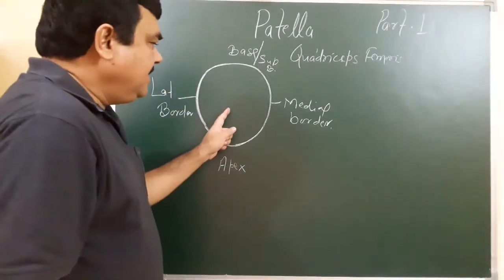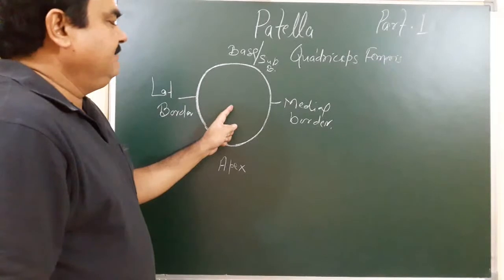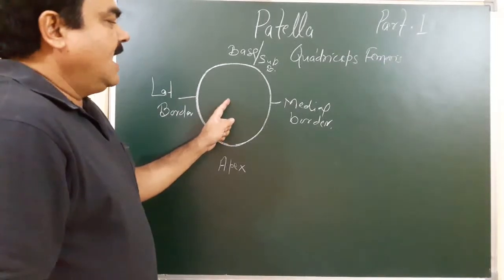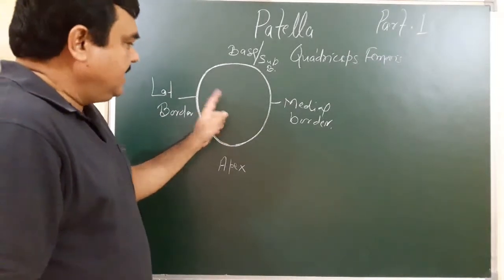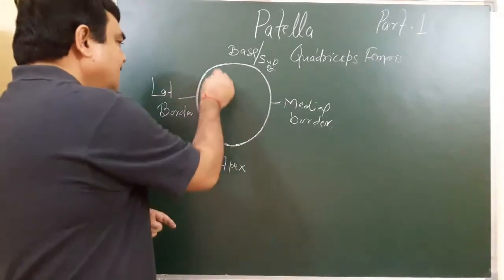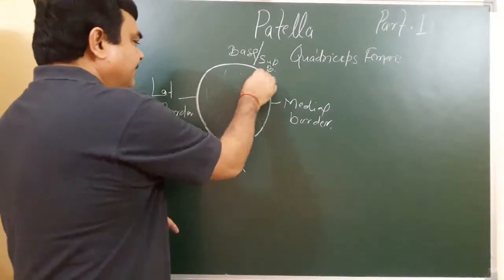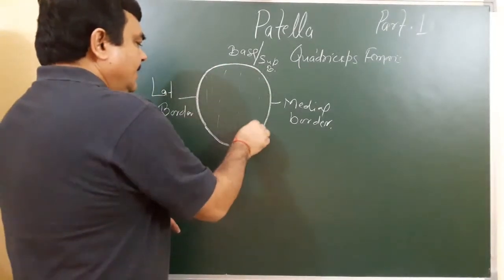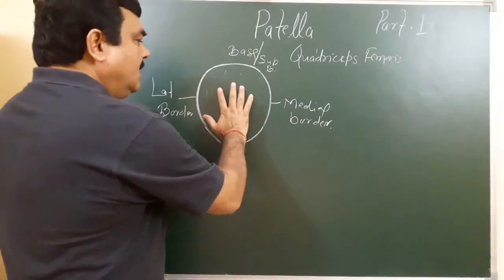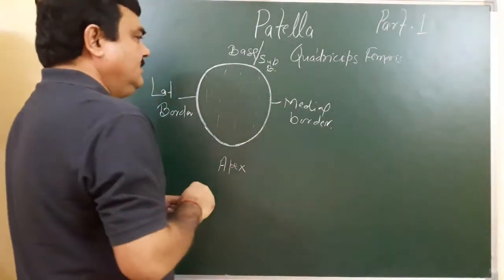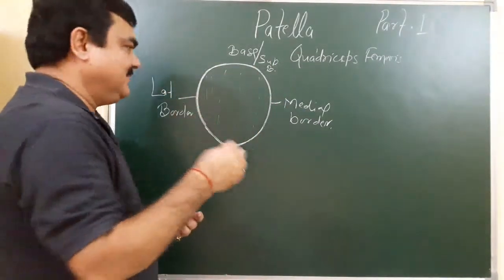This is the anterior view. The patella has two surfaces: anterior surface and posterior surface. The anterior surface is rough. If you turn it like this, you can see the posterior surface.